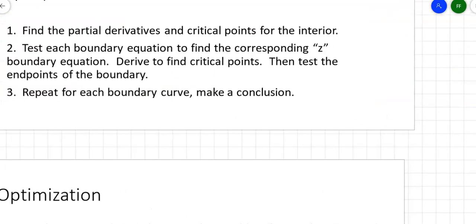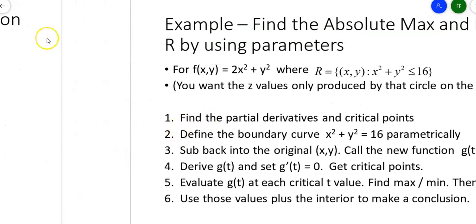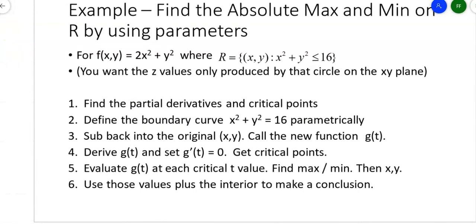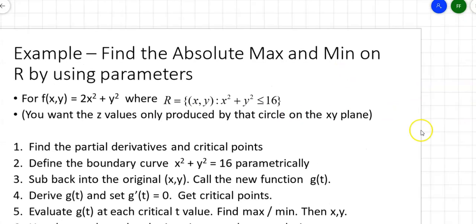Let's find maxes and mins by using parameters. Here's my function: f(x, y) = 2x² + y². This time the base is not a nice rectangle—it's a circle. The region is all points on the inside of that circle, including the boundary. The steps are: find the partial derivatives and critical points for the interior; define the boundary curve parametrically; substitute back in to get a function g(t); take the derivative to find critical t values; then compare all values and draw a conclusion.